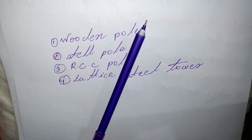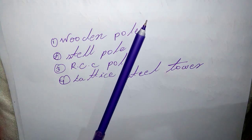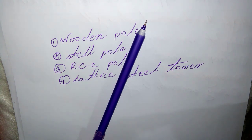The main objections of wooden supports are: tendency to rot below the ground level, shorter life of 20 to 25 years, cannot be used for high voltage above 20 kV, and less mechanical strength.